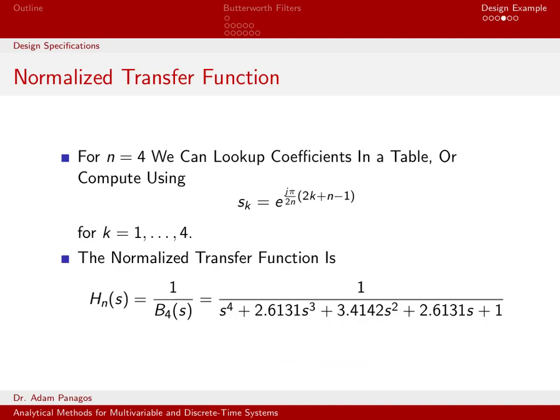So there's two different ways that we can design the normalized transfer function. One way is to go back to the equation that we had for the pole locations. And we can just compute this for k equals 1, 2, 3, and 4 when n is equal to 4 because that's the filter order we've chosen. So we could just plug into our calculator four times and figure out what those pole locations are, then construct the quantity 1 over s minus s1 times s minus s2 times s minus s3 times s minus s4, multiply all that stuff out, and then we would end up with 1 over a polynomial quantity. So that would be one way to do it.